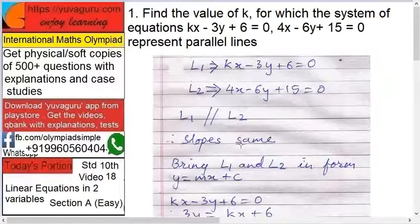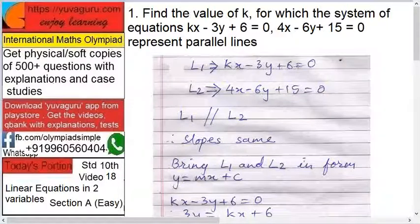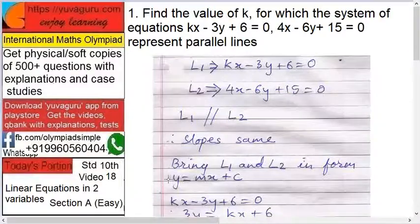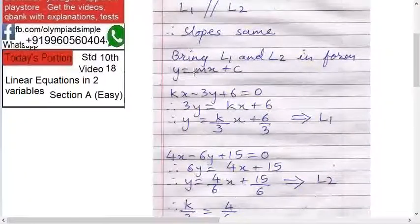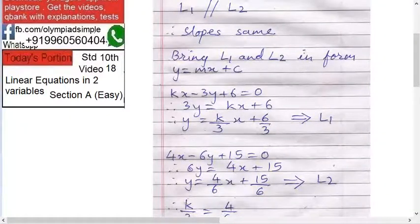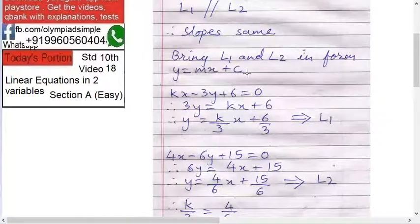Now slopes are the same. So what you do is bring this equation in the form y equals mx plus c. This is called the slope-intercept form. This equation gives what m means slope and c means the y-intercept.